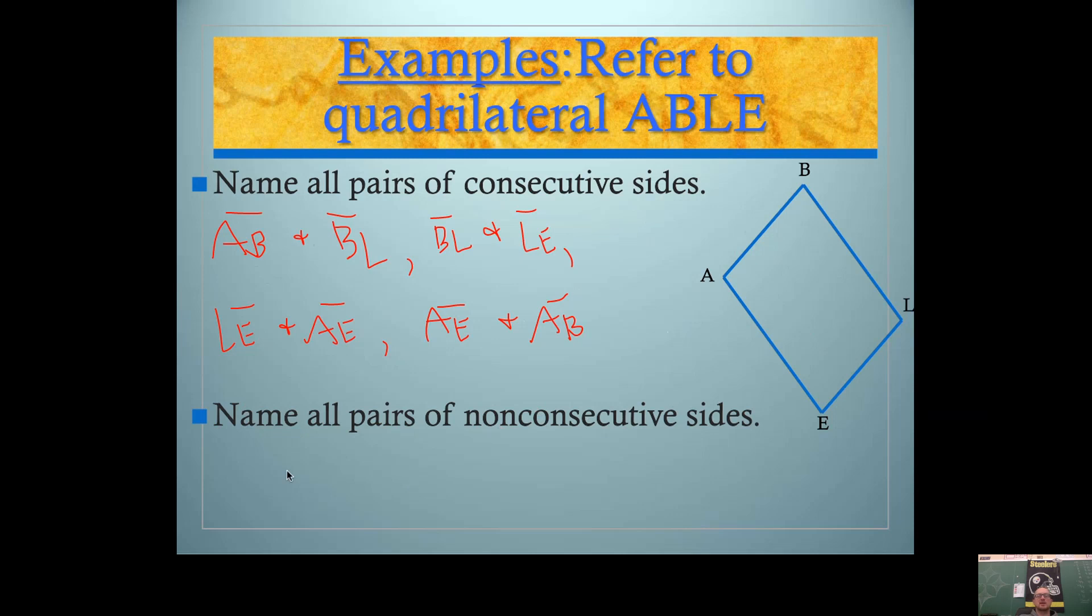Name all the pairs of non-consecutive sides. So we'll just start with segment AB. Segment AB is not next to which segment? Well it's next to this one and this one. It's not next to this one. Notice how these segments don't share a vertex. That's why they're non-consecutive. Segment BL is non-consecutive with segment AE. So there's probably half of your worksheet in this section talks about naming these pairs of parts. Are they consecutive? Are they non-consecutive? That always seems to bother people, so this slide should help you a lot there.